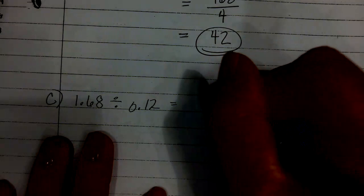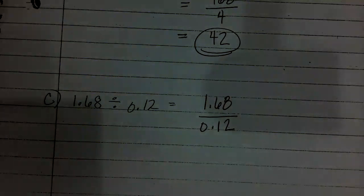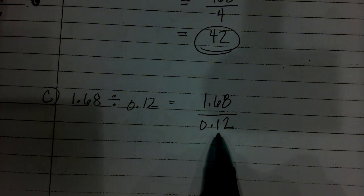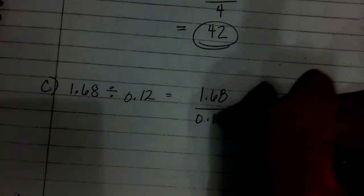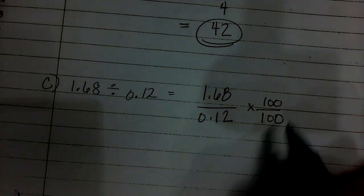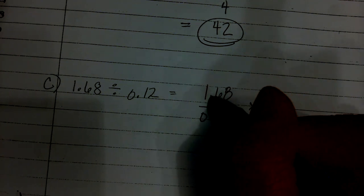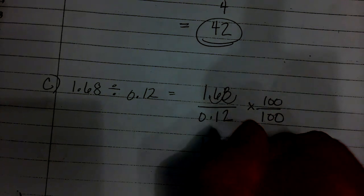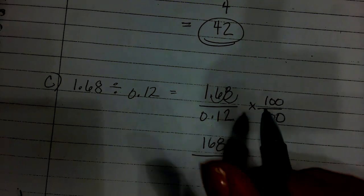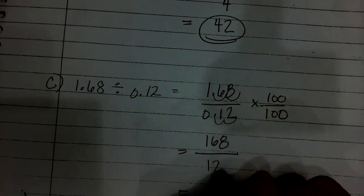Last problem for concept development: 1.68 divided by 0.12. We're working with hundredths, so we multiply by 100 over 100 to get rid of the decimal. The decimal moves two times, giving us 168 over 12, which equals 14.